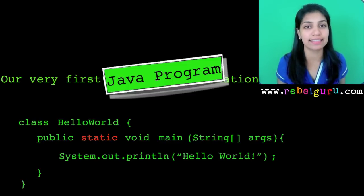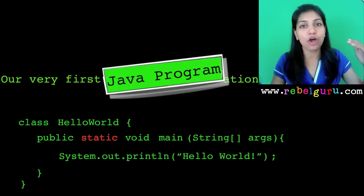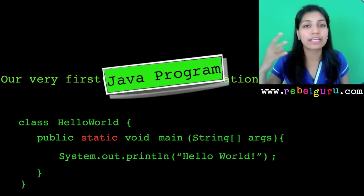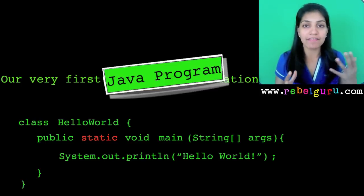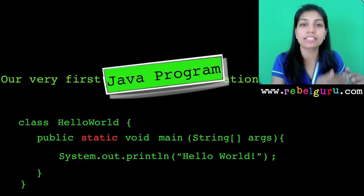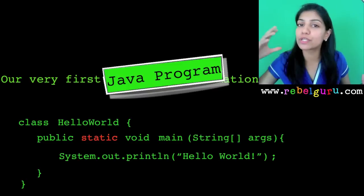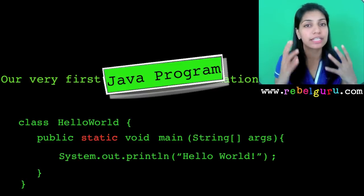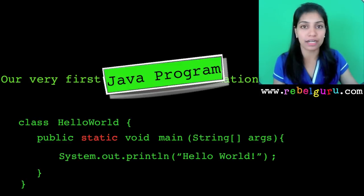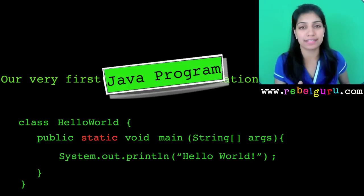The next adjective is 'static'. Typically, you create an object of a class and use the object to access data members and methods. However, there are times when you don't create an object and directly use members of the class without creating one — in that case, you make that member static. The main method is invoked without creating objects, which is why it is static.